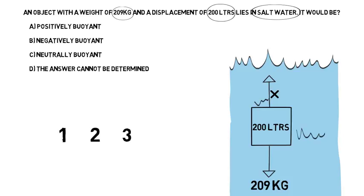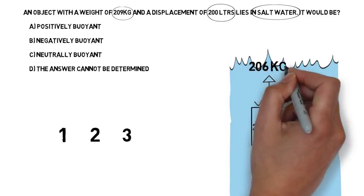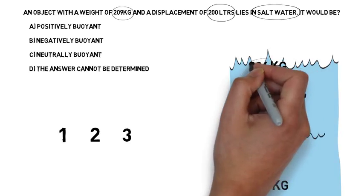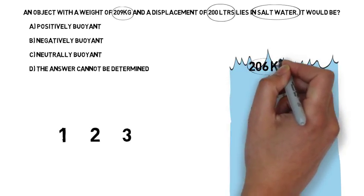Now we're going to look at the type of water. We see it's salt water, so we're going to put the salt water constant 1.03 kilograms per liter. We're going to multiply the first two numbers out. 200 times 1.03 is 206 kilograms.